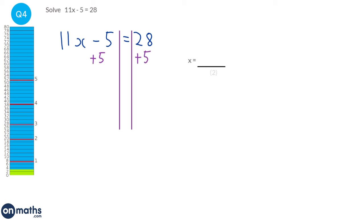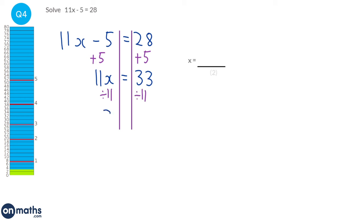The inverse of take away 5 is plus 5. We add 5 to both sides. On the left hand side we're left with 11x. On the right hand side we do 28 plus 5, which is 33. Now the 11 is multiplying x, so the inverse is dividing by 11. We divide both sides by 11, leaving x on the left and 33 divided by 11, which is 3. So x equals 3.